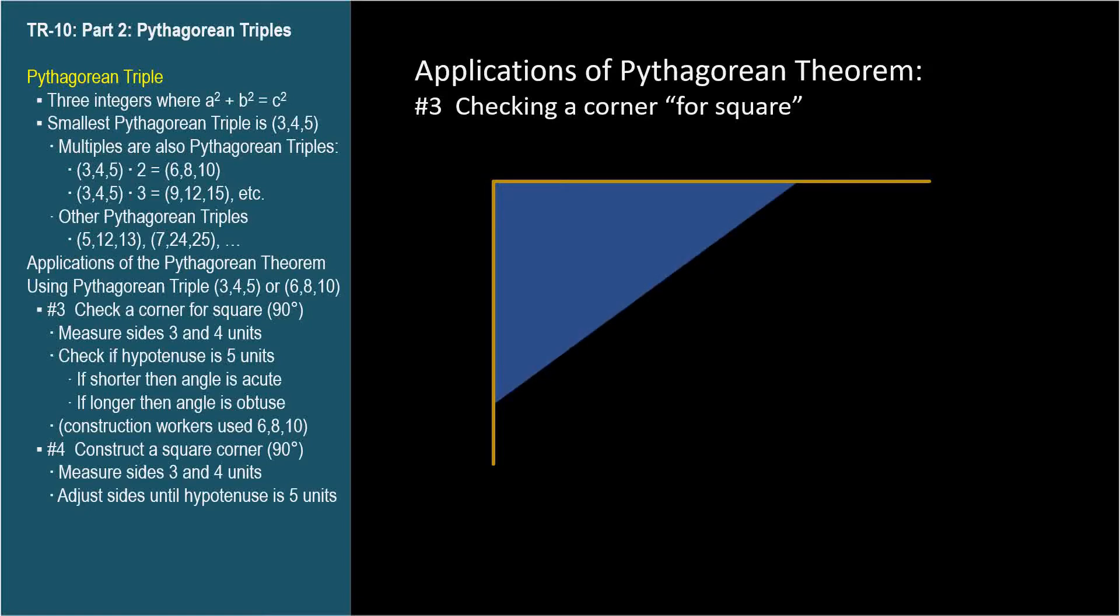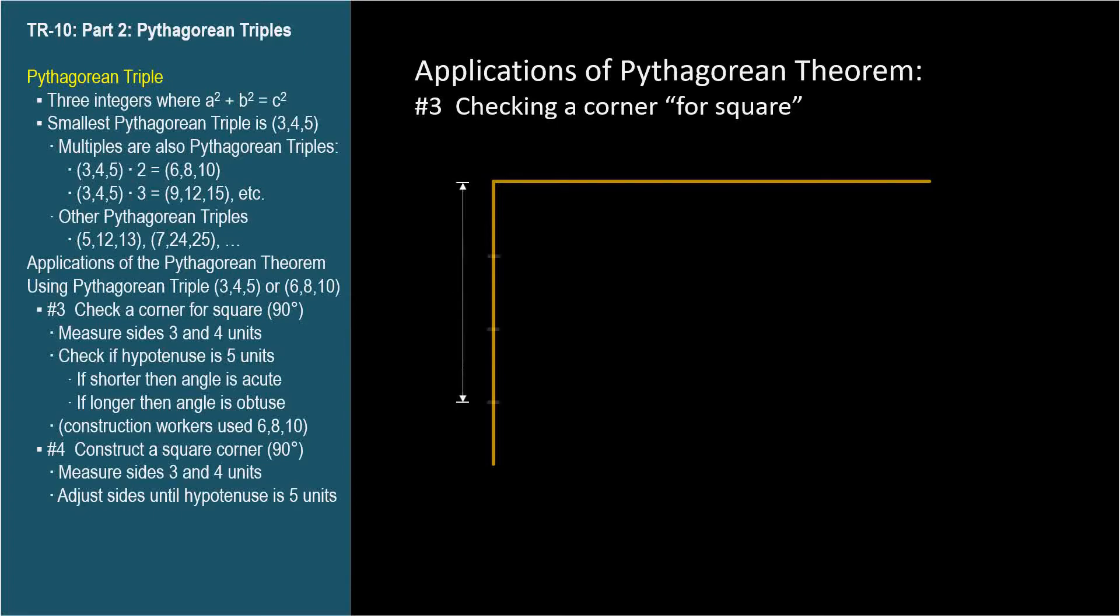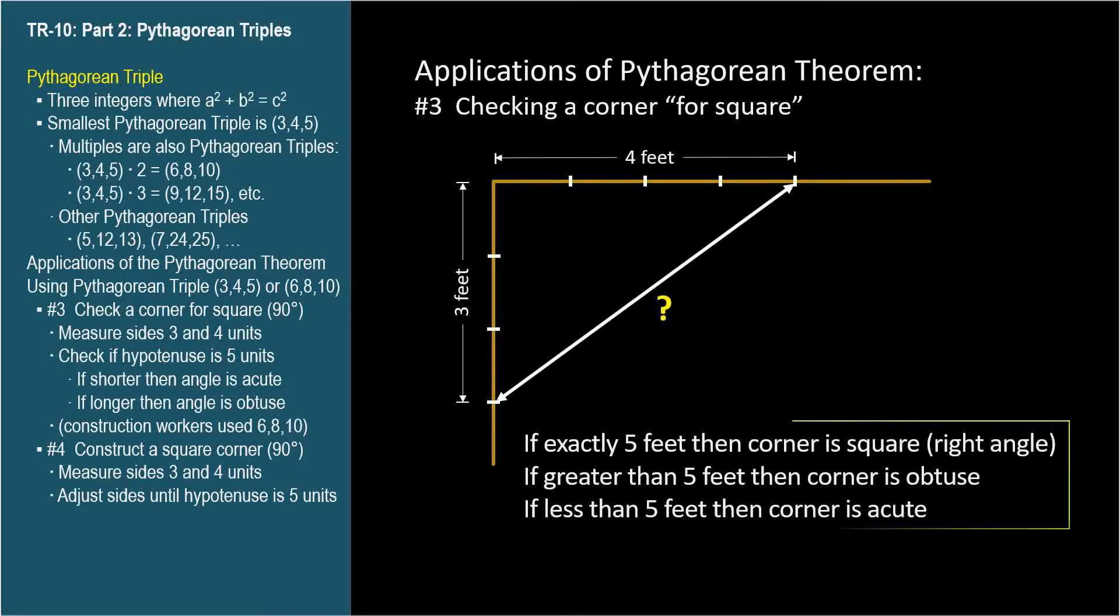Using a 3, 4, 5 Pythagorean triple, we measure out 3 and 4 feet along the sides. Then measure between these endpoints and compare the length to 5 feet. If it's exactly 5 feet, then the corner is square.